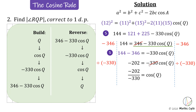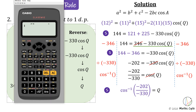Two minuses make a plus, and you can simplify to a decimal if you like. We have cosine Q, but we're looking for just Q, so reverse cosine using cosine inverse on both sides. That cancels off the cosine leaving angle Q on the right, and on the left we take cosine inverse of the ratio negative 202 divided by negative 330. Enter this in the calculator: shift cosine, fraction button, negative 202 on top, negative 330 on the bottom.